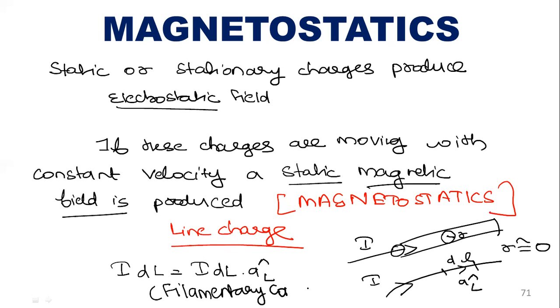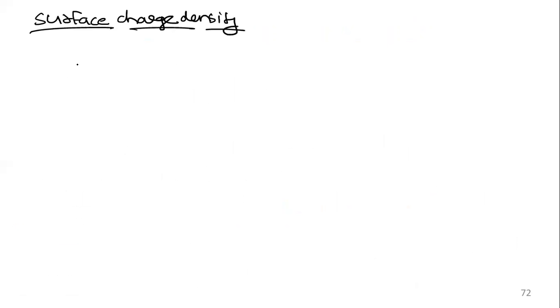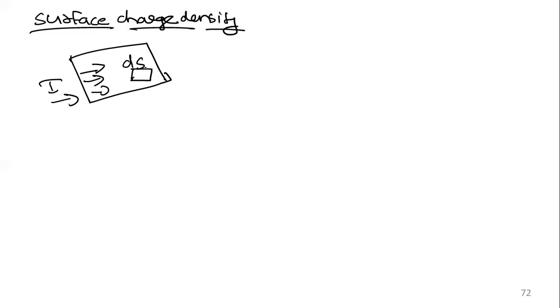This is an introductory section for magnetostatics, so listen carefully. This line current case is called a filamentary conductor. When it comes to surface charge, we have current I entering the surface. We consider a small surface dS, and the direction is along unit vector a, with one side being b. Surface charge density K can be represented as K = I/b along vector a, in amperes per meter.